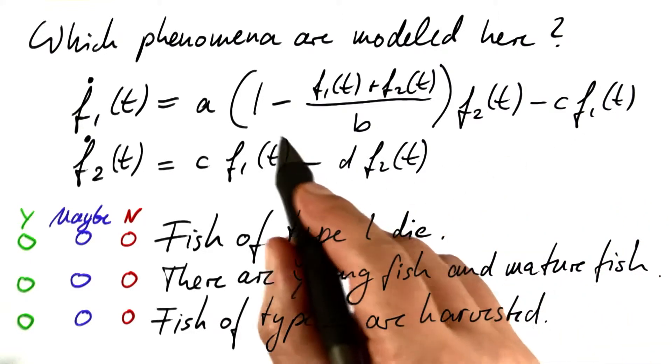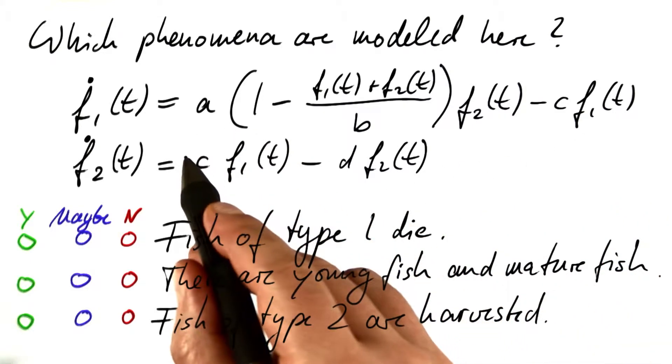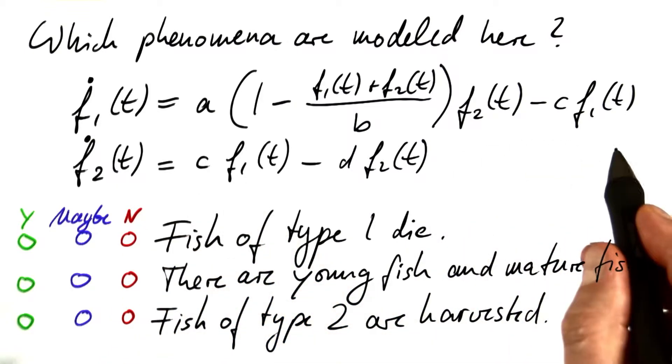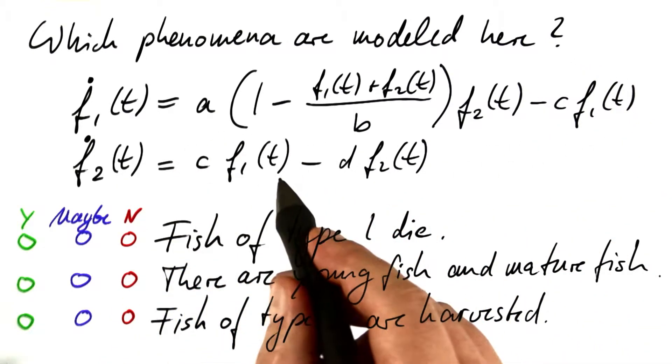But then again, it appears here with a plus sign for F2. So this rather models that fish of type 1 become fish of type 2 after a certain time.